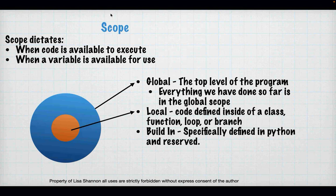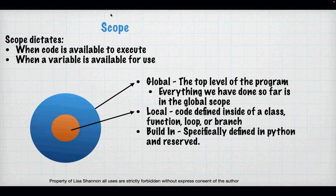There are three basic scopes in Python: global scope and local scope. Everything we've done so far is in the global scope. We're introducing the concept of local scope this week. Local scope means that code only exists in a certain place — whether inside a function, or in our case inside an if, elif, or else. We'll know it because it's indented, and it defines where the code will function and where variables exist. A variable defined inside a local scope is not available to the global scope, but the opposite is not true: if you define it in the global scope it will always be available in the local scope.